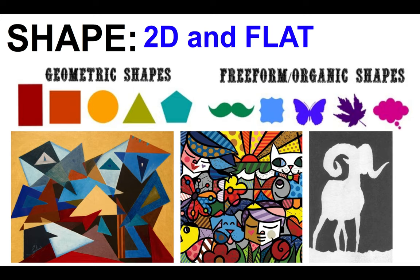With line, we can create shapes. As we close up our lines, we can start to define shapes. It's important to note that shapes are 2D and flat — two-dimensional — meaning we have height and width. We have geometric shapes, things like squares, triangles, circles, and hexagons. And then we have freeform shapes, which are more natural, soft, and organic — things like animals, leaves, and clouds.